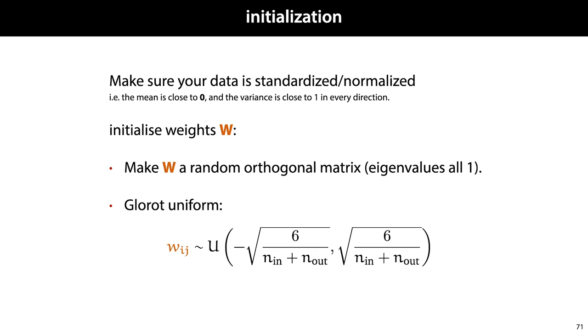There are a few ways to initialize weight matrices so that they have this property. One is to choose a random orthogonal matrix, and another is to sample the elements of your weight matrix from a uniform distribution with these bounds. That's called Glorot uniform initialization, and it's one of the more common methods used today.